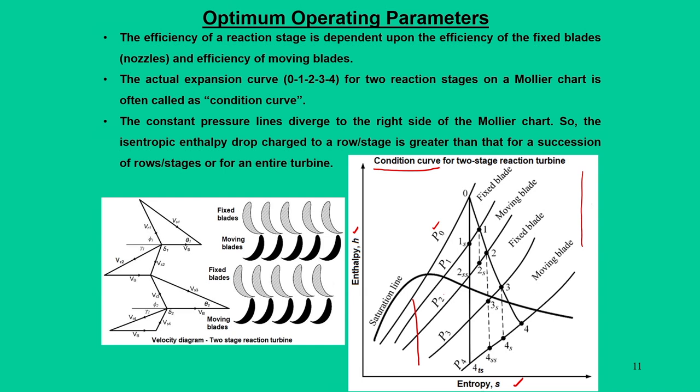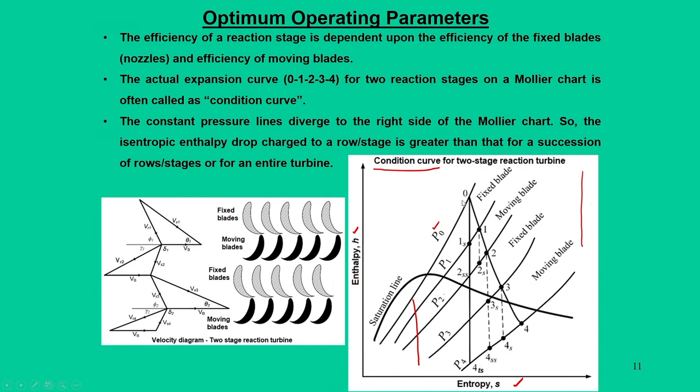So we have Vr1, Vr2, Vs1, Vs2, and Vb the blade velocity. For the next stage we have Vs3, relative velocity Vr3, and blade velocity Vb. The velocity diagrams can be constructed accordingly. Here theta refers to the angle at which the absolute velocity of the fluid enters into the moving blades, and phi is the angle of the relative velocity of the fluid when it enters the moving blades. These angles are vital because they give the orientation of the blade.